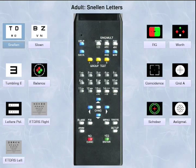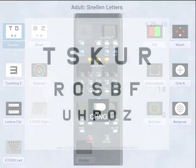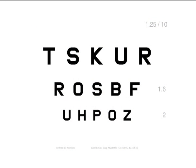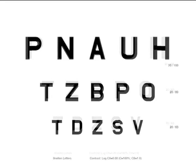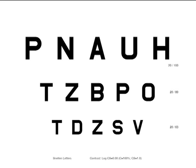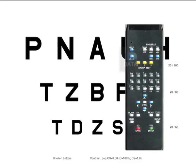Select the test and press change in order to start it. The test comprehends three eye chart lines with increasing visual acuity value. In the right edge and in the bottom are shown the data related to the displayed table. In order to display or hide this data, press the data key.